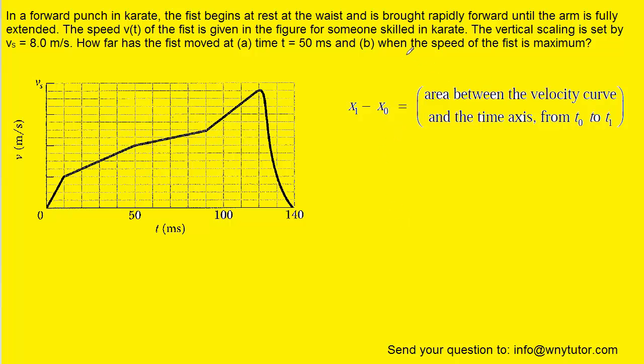We next move on to part B, which wants to know how far the fist has moved when the speed of the fist is a maximum. We can see from the graph that the maximum speed occurs at this point right here. So we're once again going to partition the graph into a series of regions and then find the area of those regions. Now it might be smart to remind ourselves that we have already found the area of this region here. We found in part A that that area is equivalent to 0.13 meters. So really, we only have to find the remaining area.